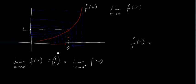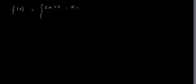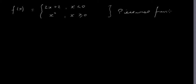Let's try an actual example. I'm going to define a piecewise function f of x as follows: 2x plus 2 when x is less than 0, and x squared when x is greater than or equal to 0. A piecewise function is one that's broken up into two or more different parts depending on what your x values are.